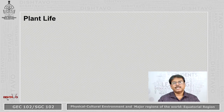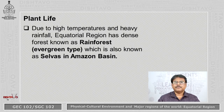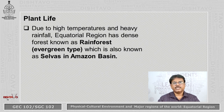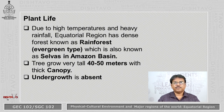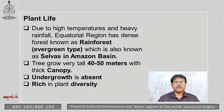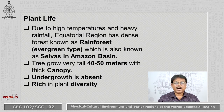Due to high temperatures and heavy rainfall, the equatorial region has a dense forest known as a rainforest, which is of the evergreen type — also known as selvas in the Amazon Basin. The trees are very tall, growing 40 to 50 meters, and they have a thick canopy. Because of this thick canopy, sunlight cannot easily penetrate to the ground, so undergrowth is absent. Plant diversity is very rich; the Amazon and Congo Basin are known for the highest biodiversity in the world and are regarded as hotspots of biodiversity.